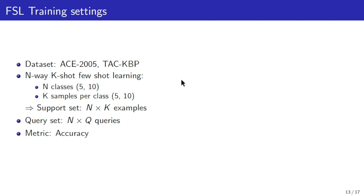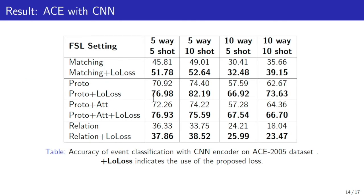Following prior studies, we evaluate few-shot learning models with four settings: 5-way 5-shot, 5-way 10-shot, 10-way 5-shot, and 10-way 10-shot. This is the result on ACE dataset with CNN encoder. As can be seen from the table, adding leave-out loss to the base few-shot learning model improves the performance significantly, and the highest improvement is achieved with prototypical network under 5-way 10-shot settings.